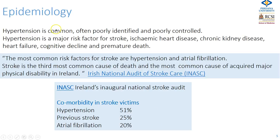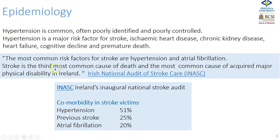Hypertension is common, often poorly identified and poorly controlled. It's a major risk factor particularly for stroke, ischemic heart disease, chronic kidney disease, heart failure, cognitive decline in later years, and premature death. According to the Irish National Audit of Stroke, the most common risk factors for stroke are hypertension and atrial fibrillation.